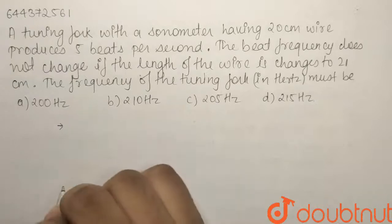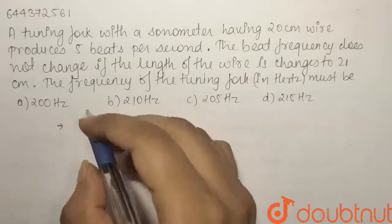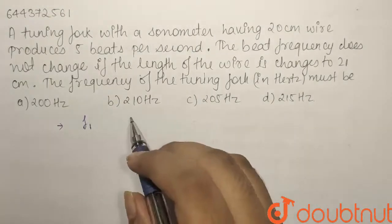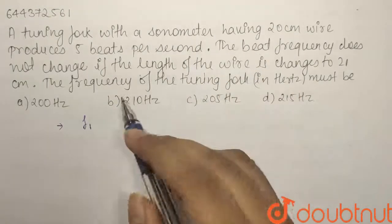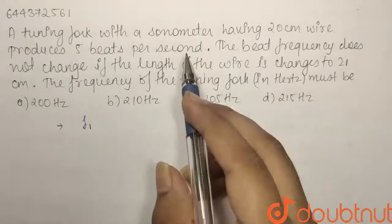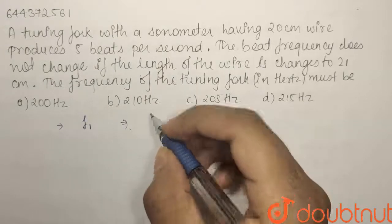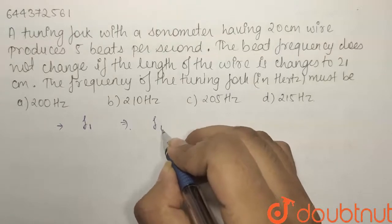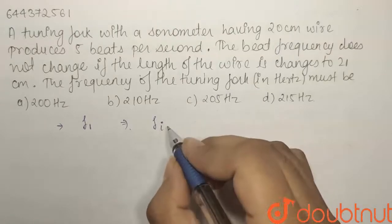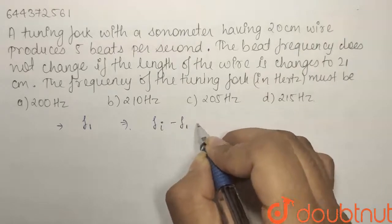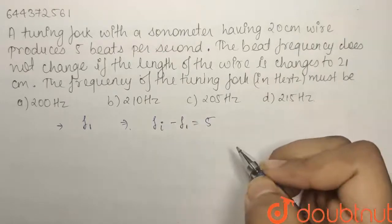Let us say that the tuning fork has a frequency f1. Initially with 20 centimeter wire it was creating 5 beats per second. If the initial frequency was fi of the sonometer wire and let us assume fi was greater than f1, then fi minus f1 equals 5 beats per second.